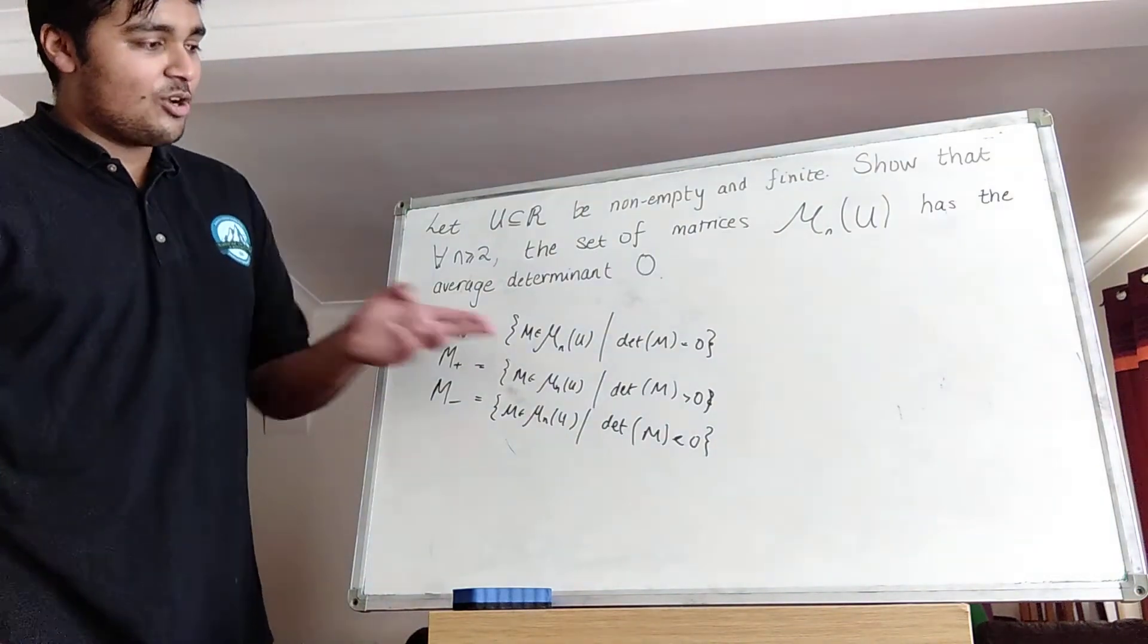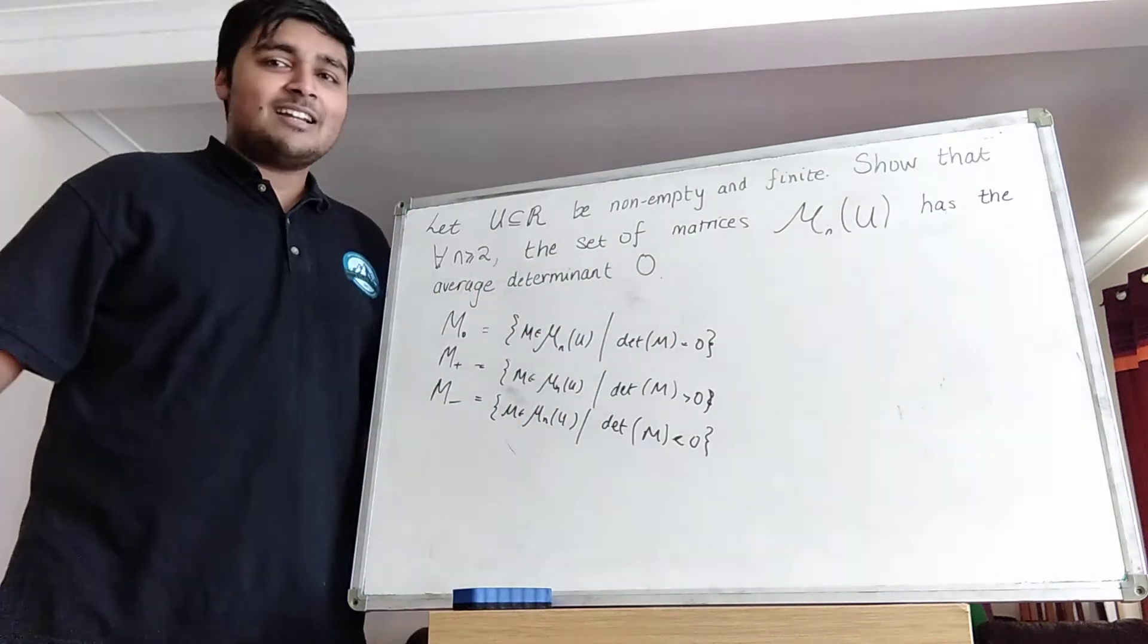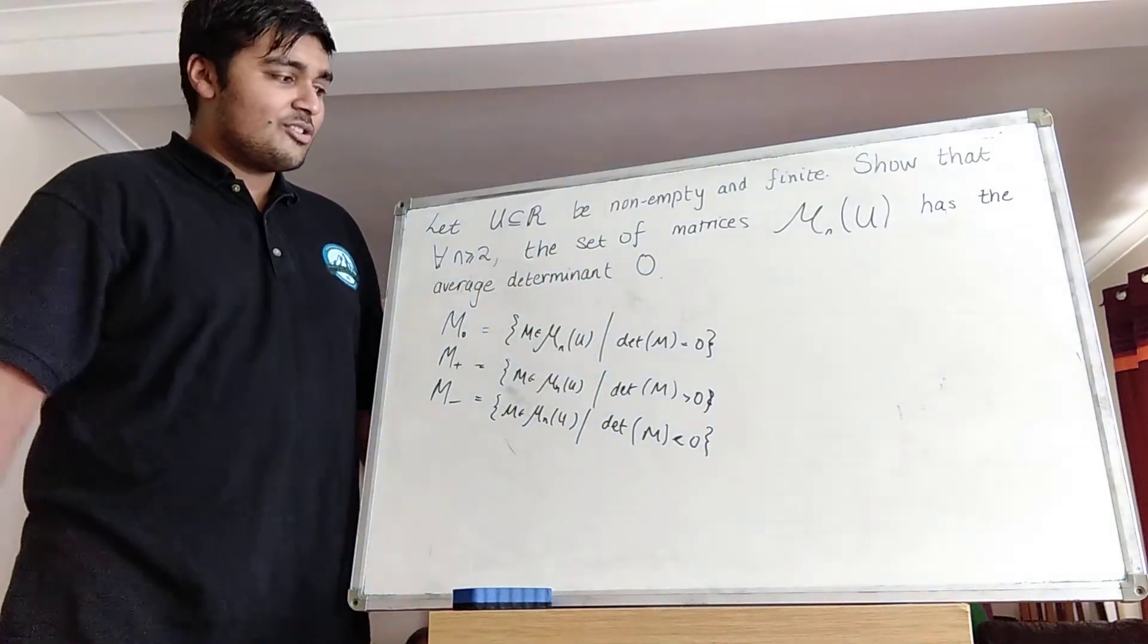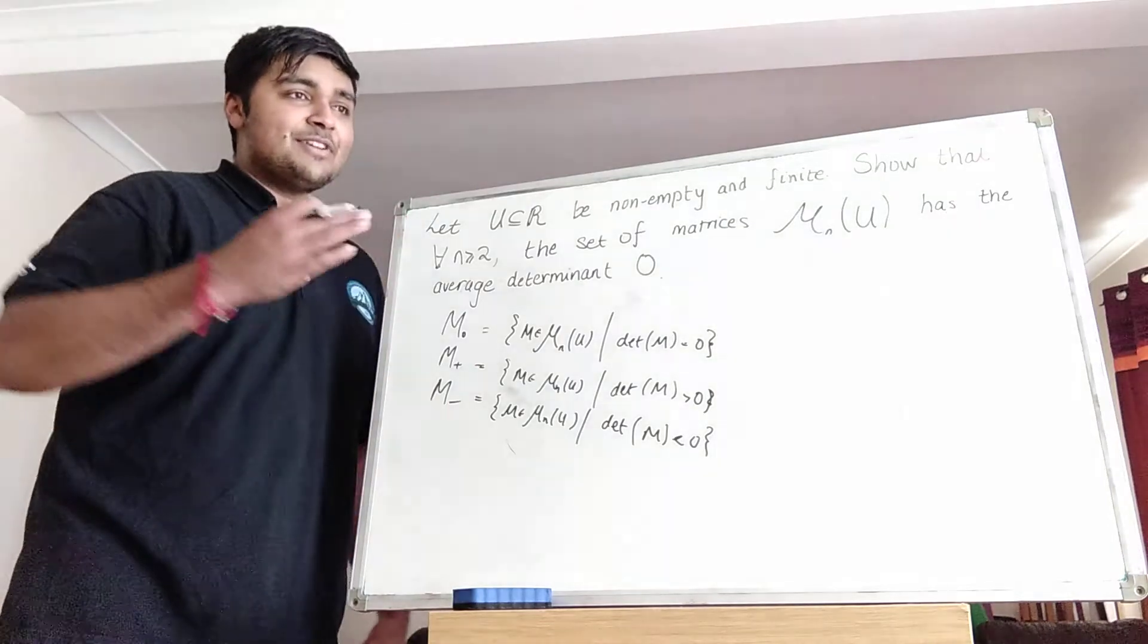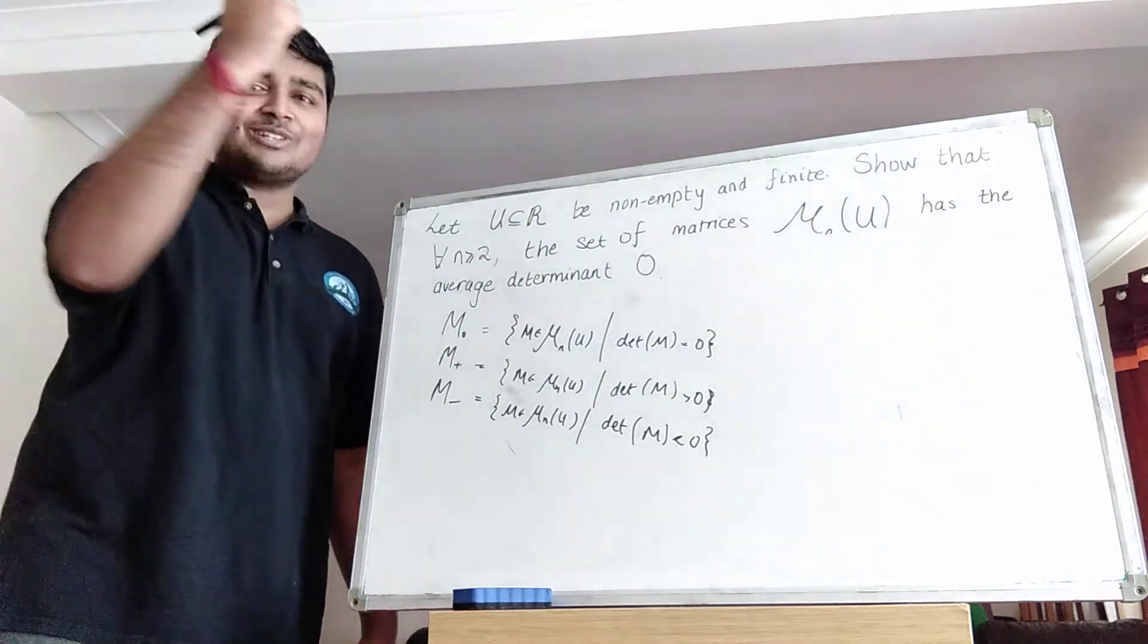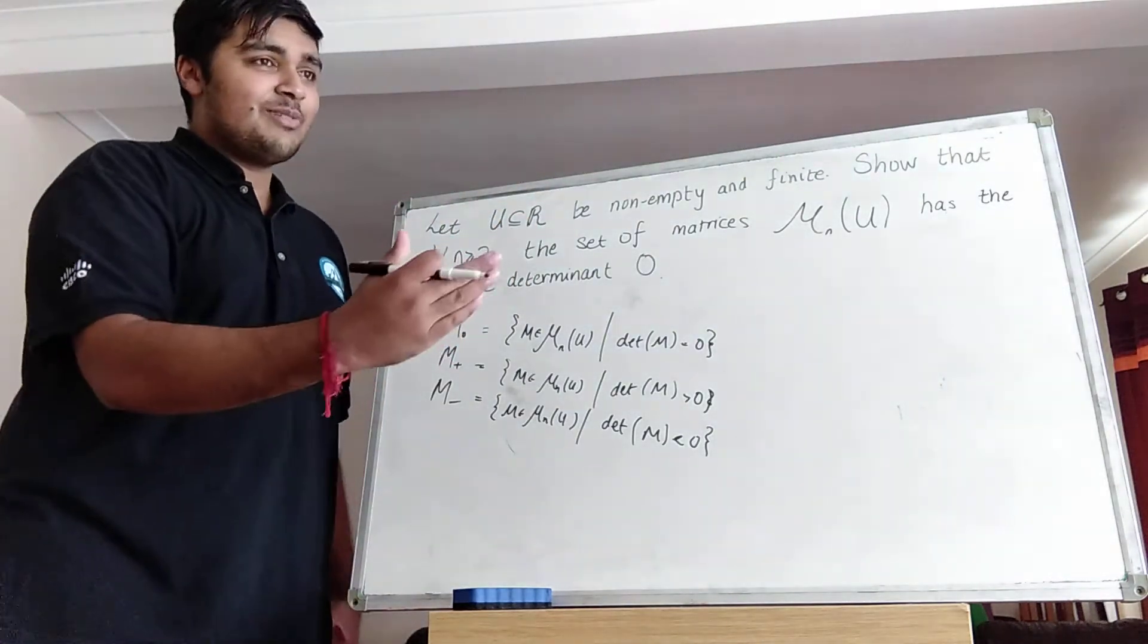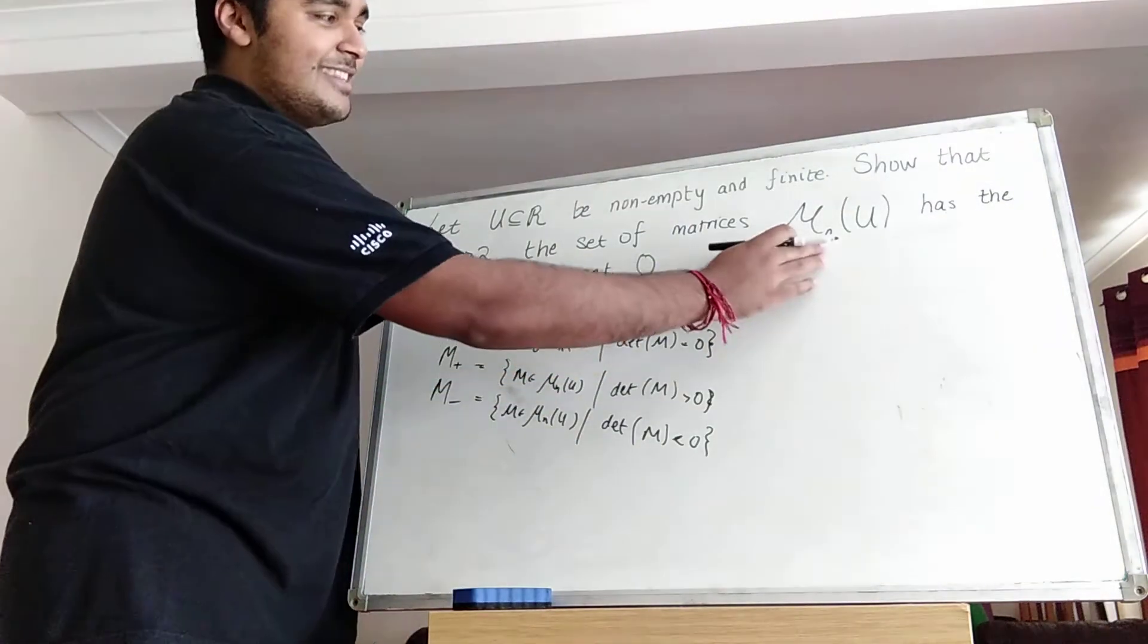Now firstly look at this top set. When we sum up the determinants of the matrices in this set, we're just adding up a bunch of zeros. So it's not going to contribute anything in terms of when we're working out the average on the numerator. So remember to work out the average we're going to add up all the determinants and then divide through by the number of elements in the set. Well how many elements are in this set here?